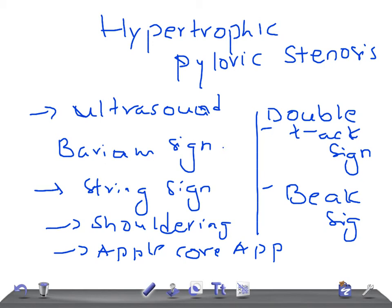So to summarize: the investigation of choice is ultrasound, and the barium signs you see are the string sign, shouldering, apple core appearance, double track sign, and beak sign. Thank you so much for watching this video — take care.